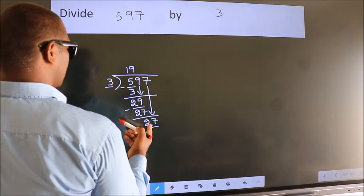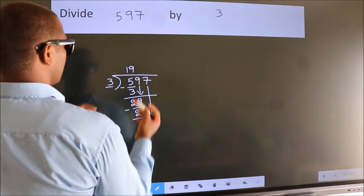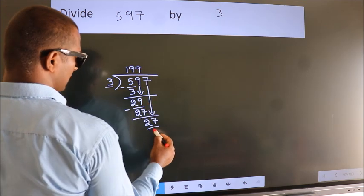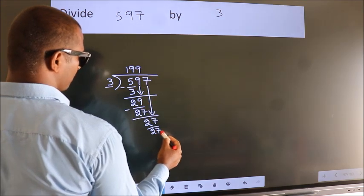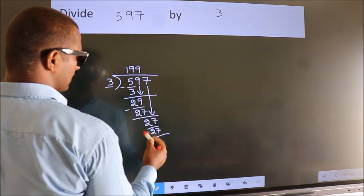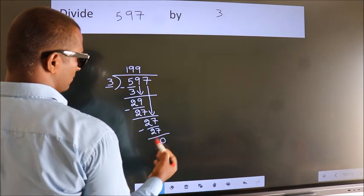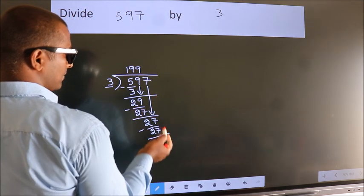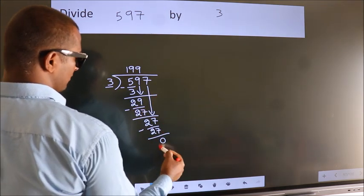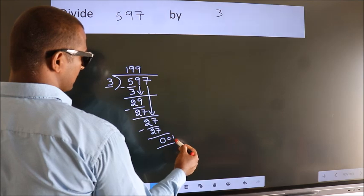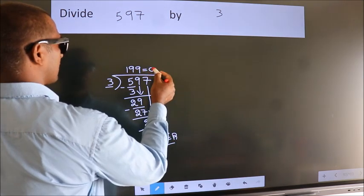When do we get 27? In 3 table. 3 nines, 27. Now, we subtract. We get 0. No more numbers to bring it down. So, we stop here. This is our remainder. This is our quotient.